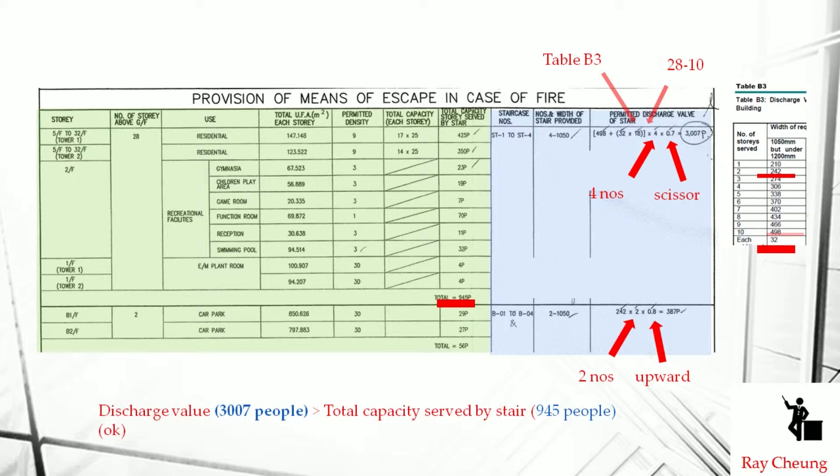There is also a basement example where, when going upward, reduction factors apply. The calculated discharge value exceeds the required capacity, confirming compliance with the Code of Practice. Thank you.